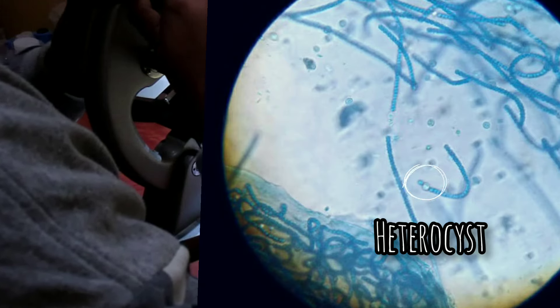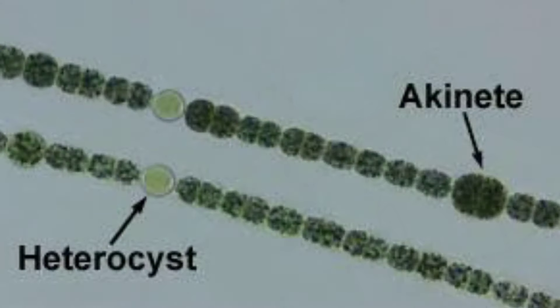Besides the formation of heterocysts, the filaments occasionally form akinetes which are not found in this slide, but I have collected some microscopic images of akinetes of Nostoc from internet. Akinetes are oblong or spherical and are much larger than the vegetative cells. They are formed centrifugally in series between two successive heterocysts. Under favorable conditions, each akinete develops into a new filament.